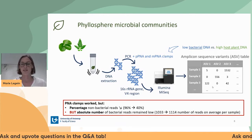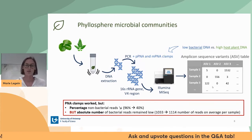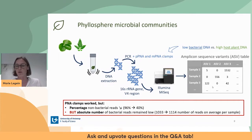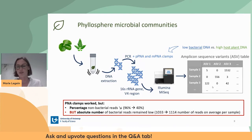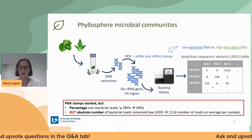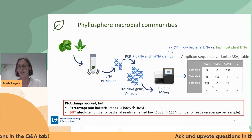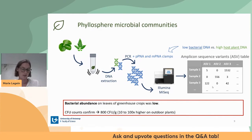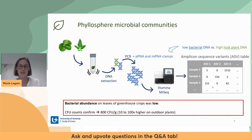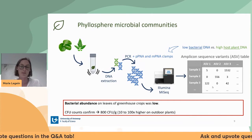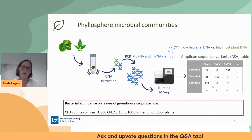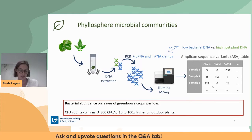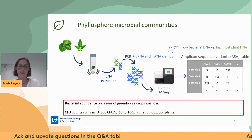This method worked — we got the percentage of non-bacterial reads down from 96% to 40%. Unfortunately, the absolute number of bacterial reads remained low, around 1,000 reads per sample, much lower than we usually get from outdoor plants. CFU counts confirmed this: we got around 800 CFUs per gram of leaf, while outdoor plants usually have 10 to 100 times higher CFU counts.